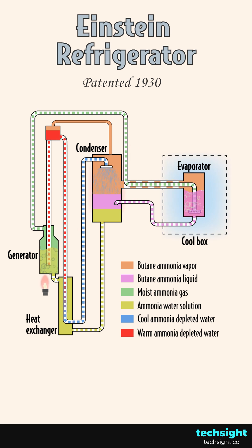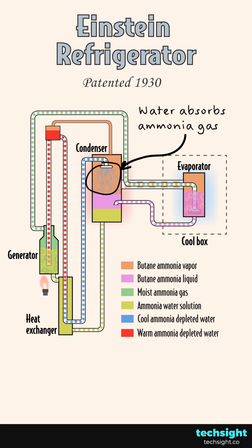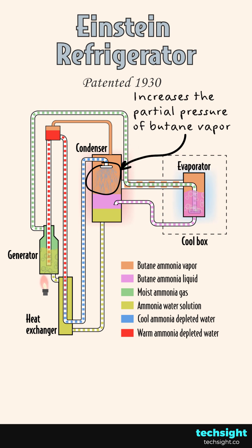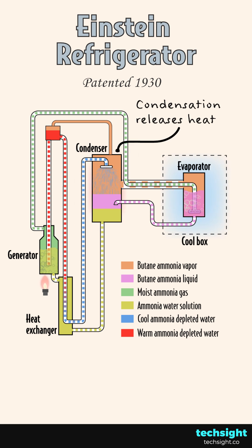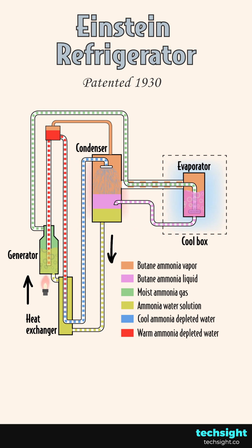But it doesn't stop there. Butane ammonia vapour flows from the evaporator to the condenser. Here, water from the generator absorbs ammonia gas. This increases the partial pressure of the butane vapour in the mixture and causes it to condense into liquid. The condensation process releases the heat picked up at the evaporator. Then the ammonia water solution falls to the bottom of the condenser and returns to the generator to allow the cycle to repeat.